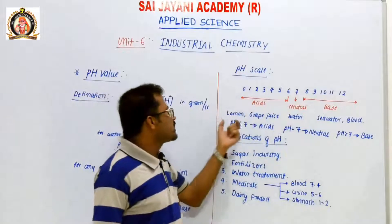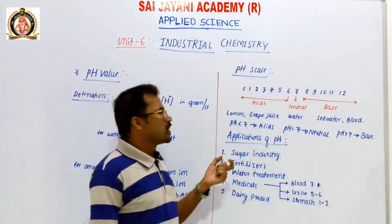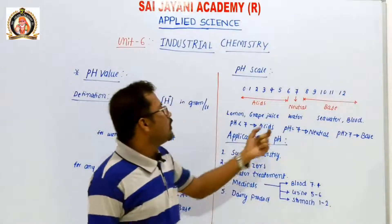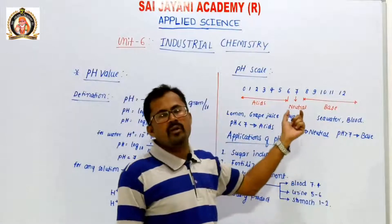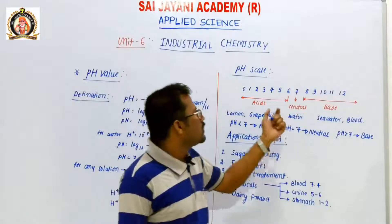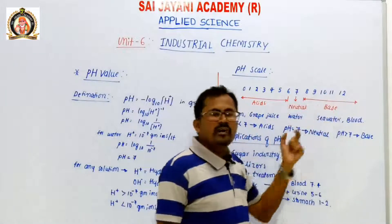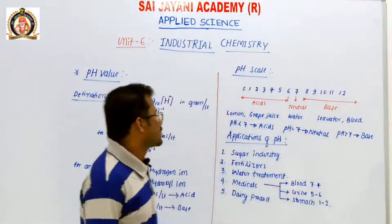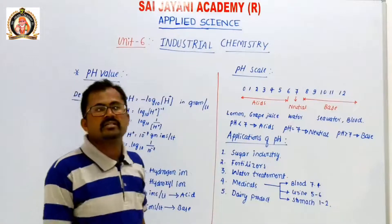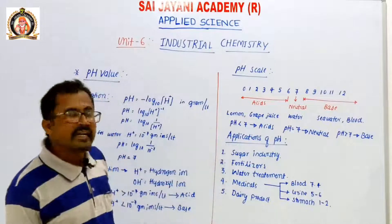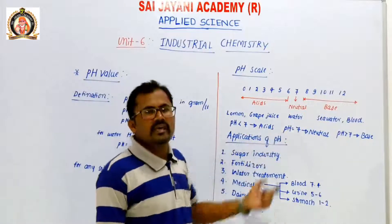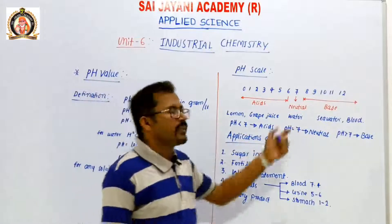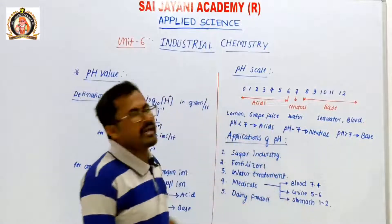Examples: for acids — lemon juice, which is a citric acid, and grape juice are also acidic. For neutral solution, the example is water. Water is a neutral solution. For basic solutions — sea water and human blood are examples of base. This is the pH scale — the scale which indicates what solutions are acids, what are neutral, and what solutions are base.